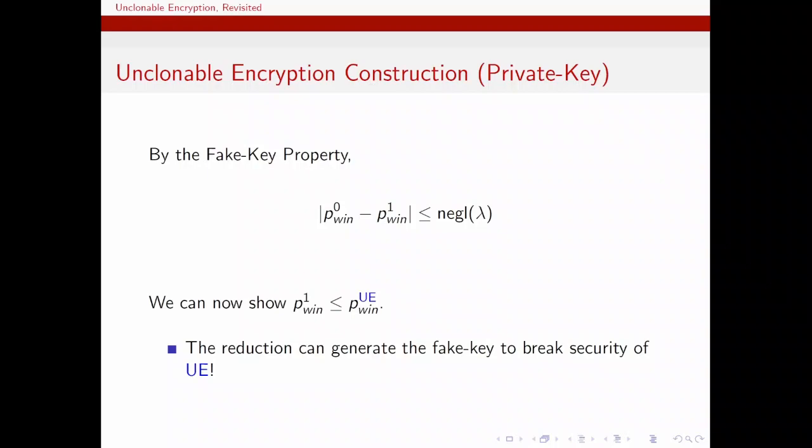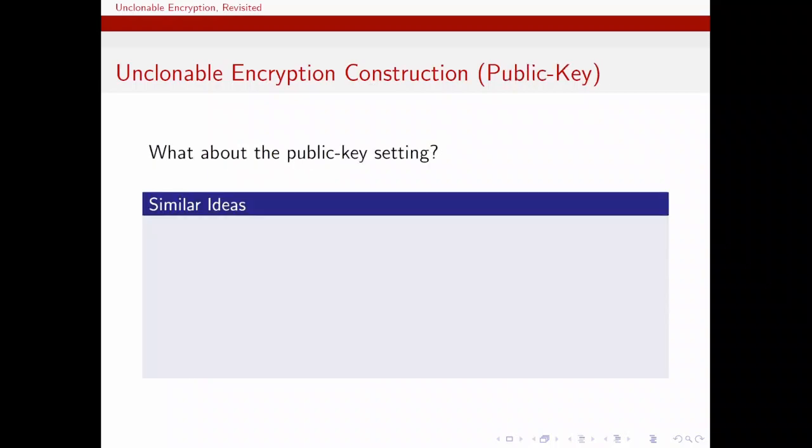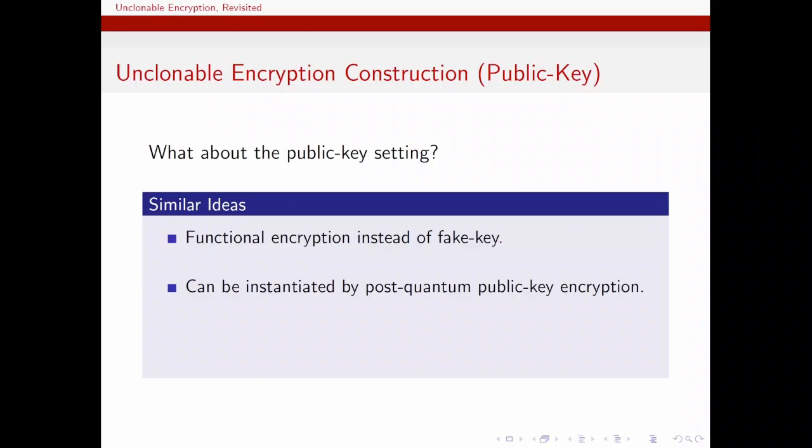And in our paper, we instantiate this fake key property using pseudorandom functions. We follow the same philosophy in the public key setting. However, instead of the fake key property, we rely on functional encryption. And this can be instantiated using post-quantum public key encryption, which is trivially necessary for public key unclonable encryption. We also make use of private key encryption with pseudorandom ciphertexts. And please refer to the manuscript for the details.